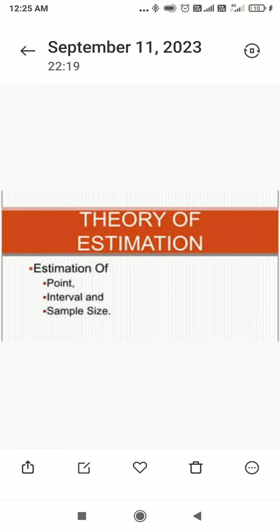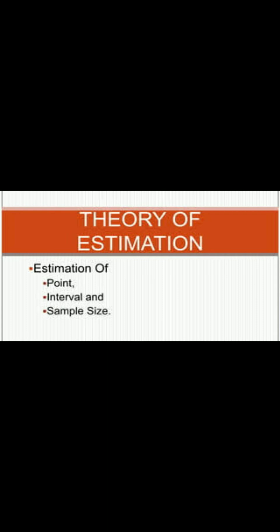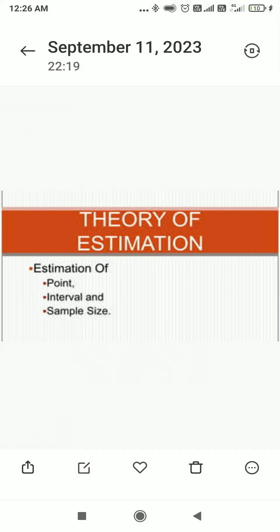In the theory of estimation, we classify into two types: one is point estimation, and another one is interval estimation. In point estimation, a sample statistic — that is, a numerical value — is used as an estimate of the population parameter. In interval estimation, a probable range is specified within which the true value of the parameter lies.